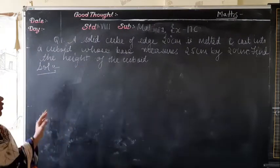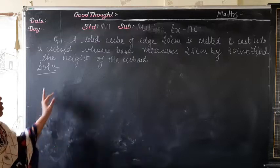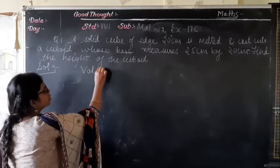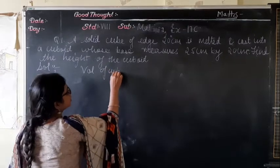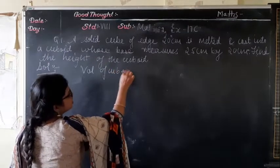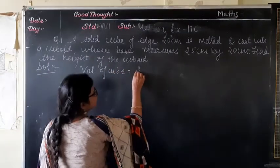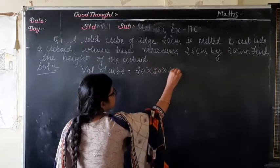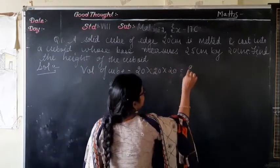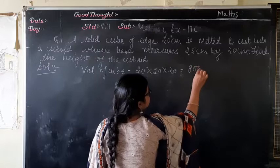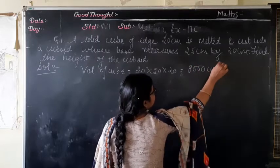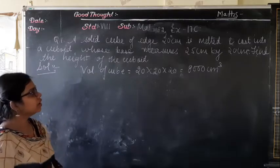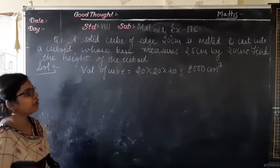So firstly, we write down the volume of the cube. Volume of cube is 20 × 20 × 20 cm, which is 8000 cm³. After melting, it takes the shape of a cuboid.